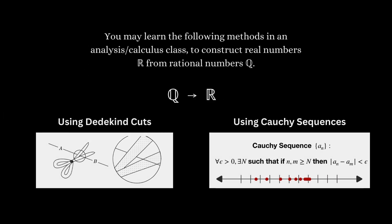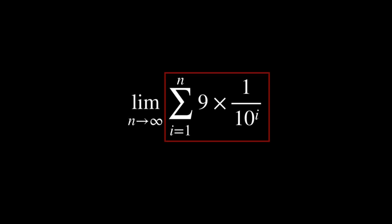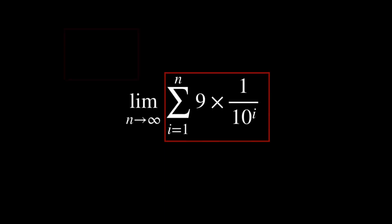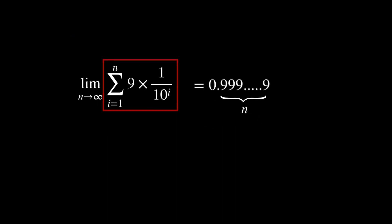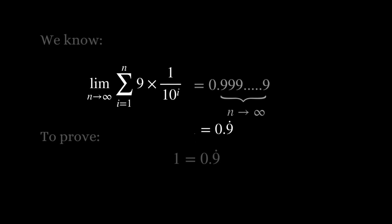You will also discover that 0.9 repeating can be expressed as a limit of this expression as n approaches infinity. This expression here is just a compact way of writing 0.9 with n 9s after the decimal point. So when this n gets larger and goes to infinity, it exactly represents 0.9 with infinitely many digit 9s after the decimal point.